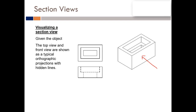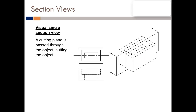If you want to show internal details, you can represent them as hidden lines. The correct way to add section lines starts with the cutting plane line. This line is called the cutting plane line, and I will change the color so you can see it clearly.